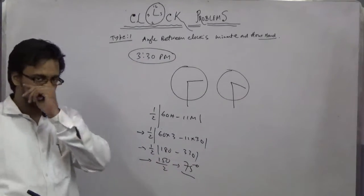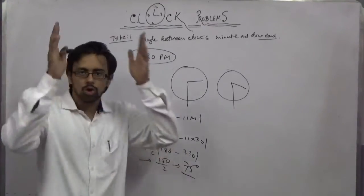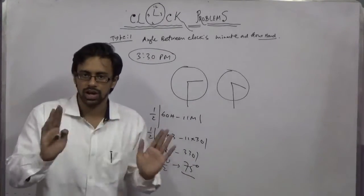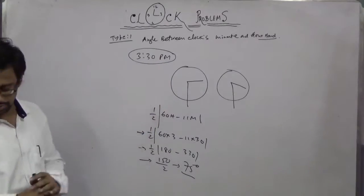That gives half into 150, which equals 75 degrees. The negative sign becomes positive — you always take the positive value. So Type 1 is done.